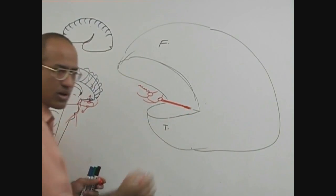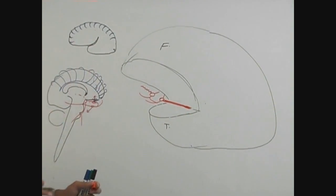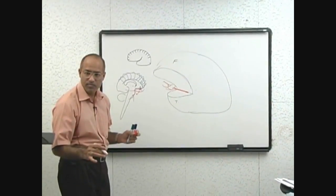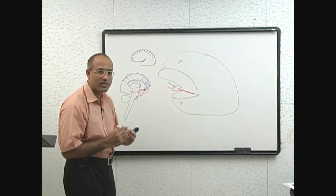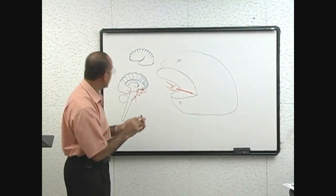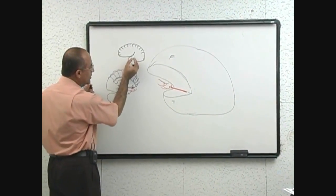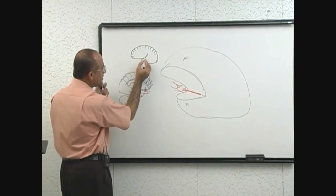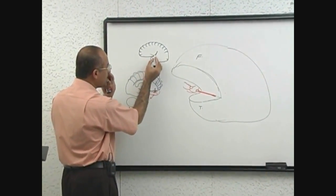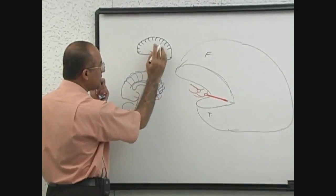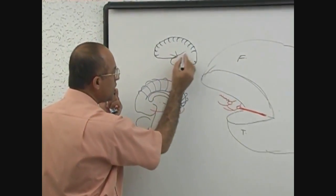The middle cerebral artery moves laterally into the stem of the lateral sulcus. This is the stem of the lateral sulcus. The lateral sulcus has one anterior ramus, one superior ramus, and...